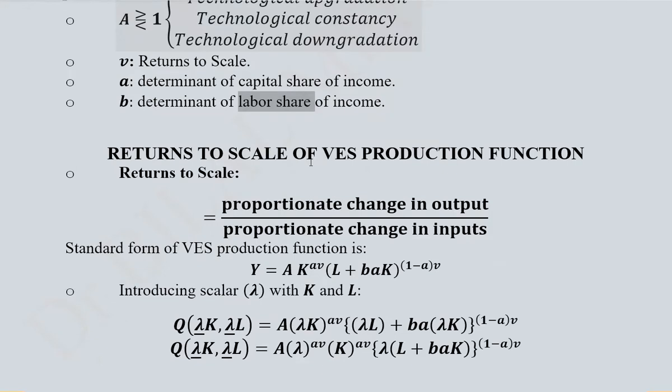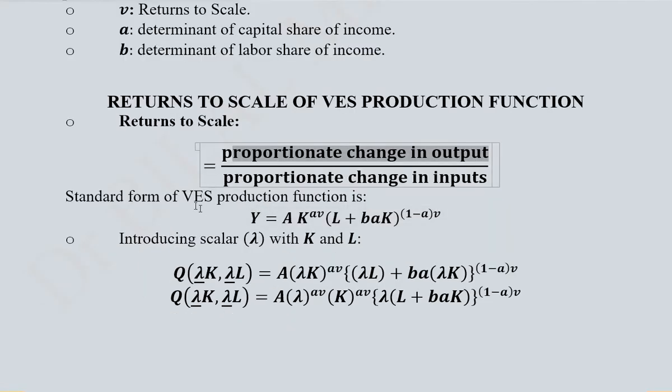The first analysis we'll do is the returns to scale of the VES production function. Returns to scale is the ratio of proportionate change in output to proportionate change in inputs. We can test this by introducing lambda (λ) as a scalar, which we'll attempt to factor out. If it factors out, we can call it a homogeneous production function.